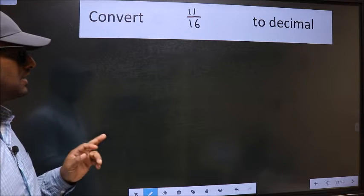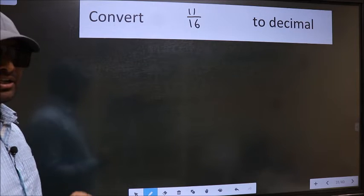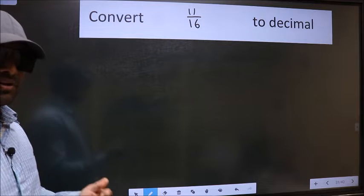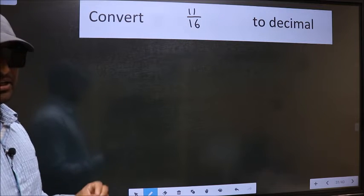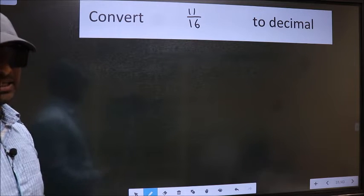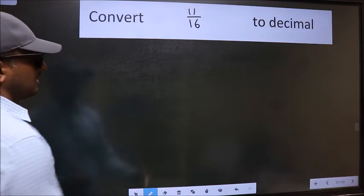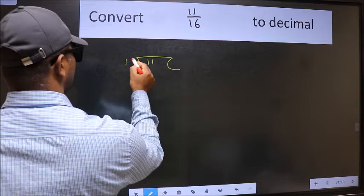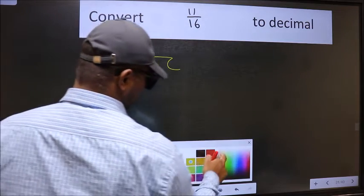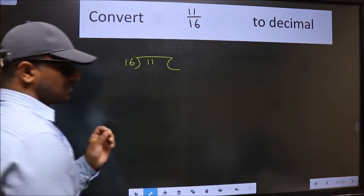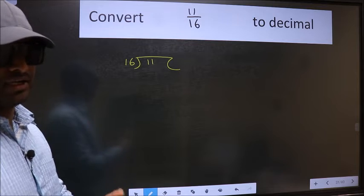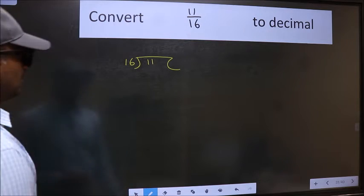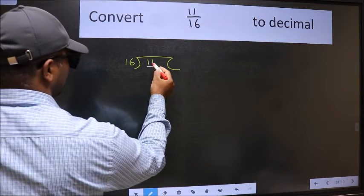Convert 11/16 to decimal. To convert to decimal, we should divide. We should frame it in this way: 11 here and 16 here. This is step 1. Next, here we have 11 and here 16.